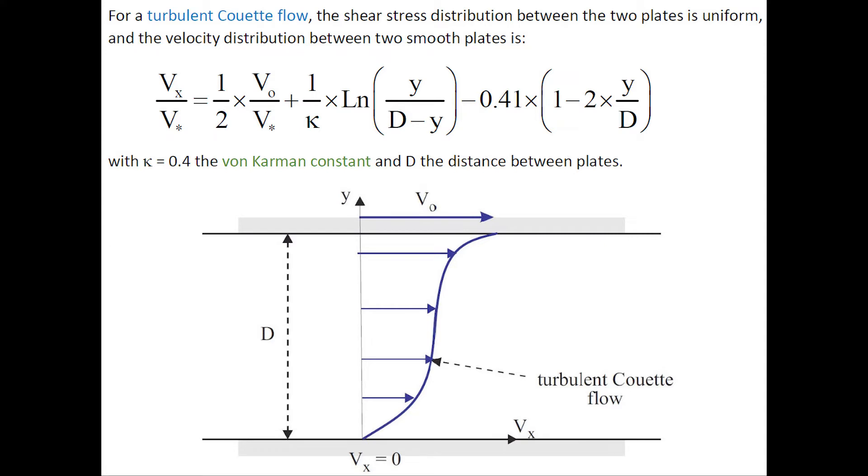First, for a turbulent duct flow, the shear stress distribution between the two plates is uniform, and the velocity distribution between the two smooth plates can be expressed here, in which the shear velocity is shown and kappa, the von Kármán constant, is used also.